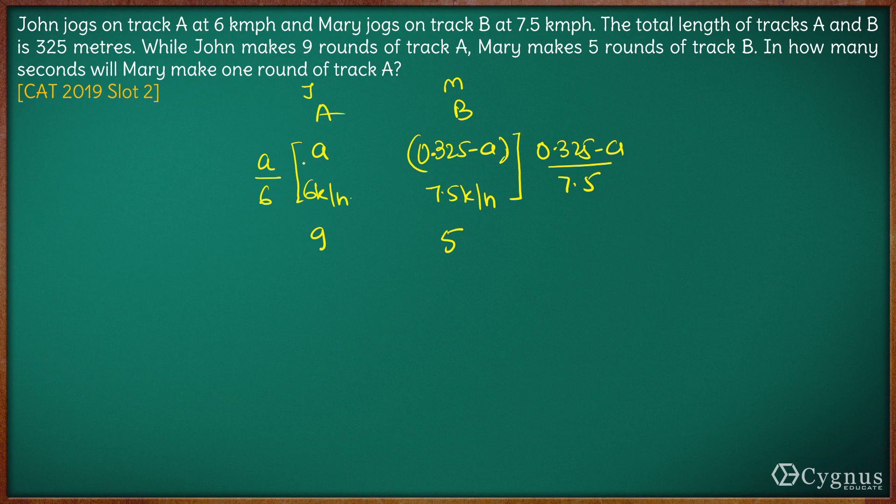The total time taken by John to cover nine rounds will be 9 times A by 6, and the total time taken by Mary to cover five rounds will be 5 times 0.325 minus A upon 7.5.